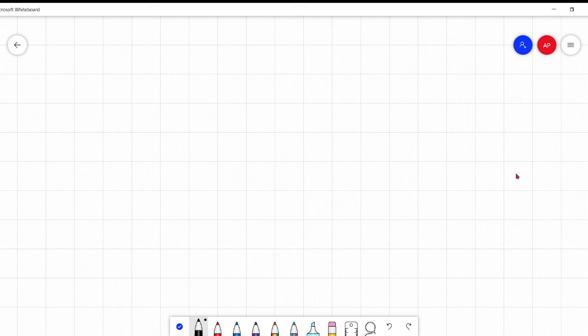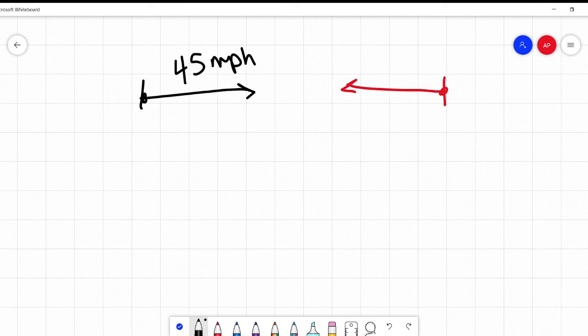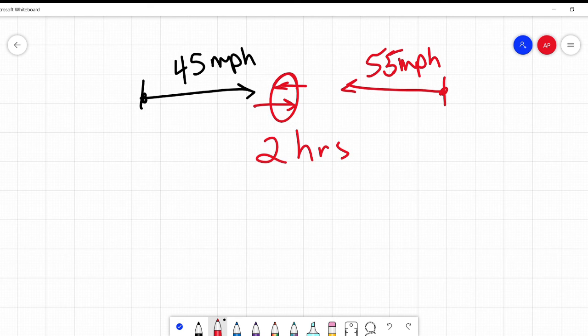Third example. Our third problem is going to be a little different. Just to show you, sometimes the variable they're asking for, the thing they're asking for, can change. Let's say I had two cars starting at two different cities. And they're driving towards each other. And the first one is going 45 miles per hour. And our other one is going 55 miles per hour. After two hours, they pass each other. How far apart are the two cities?